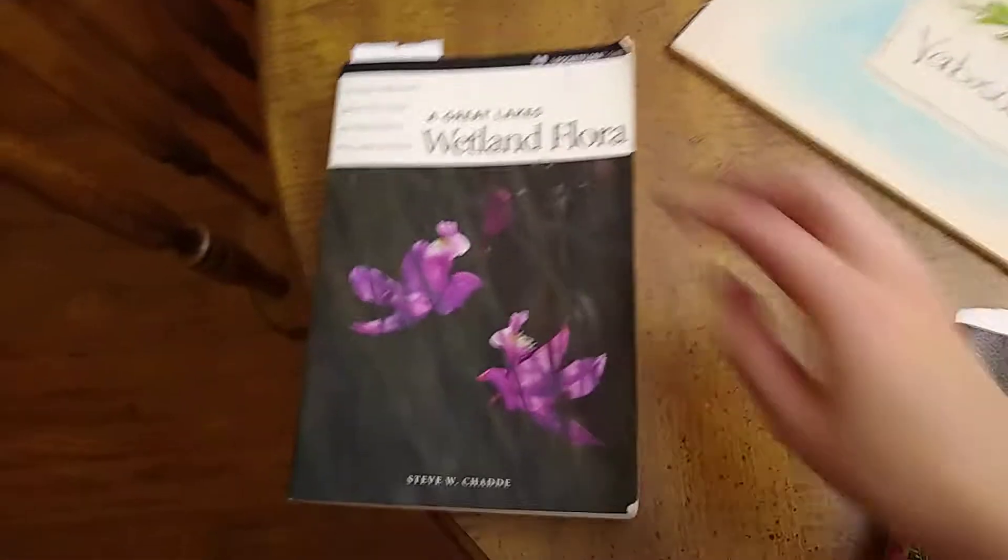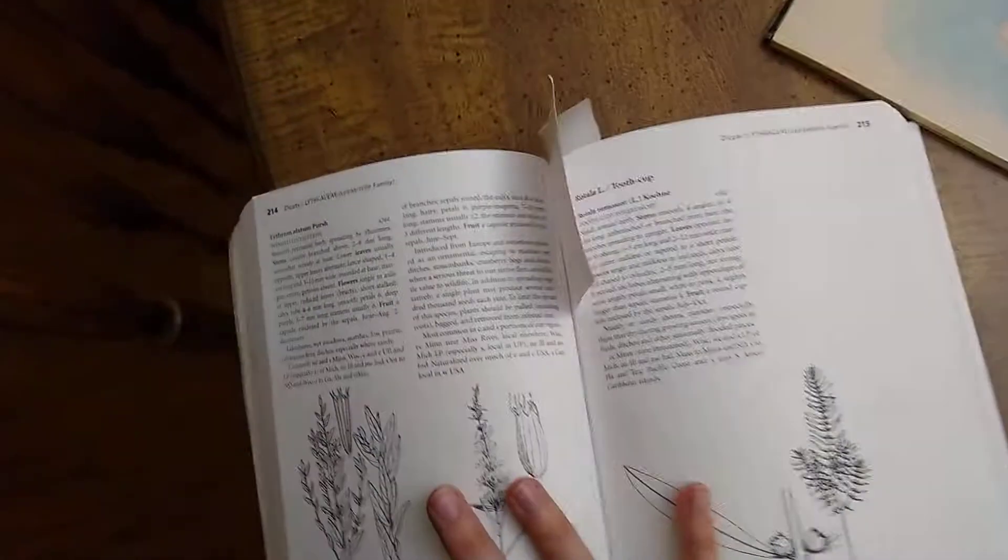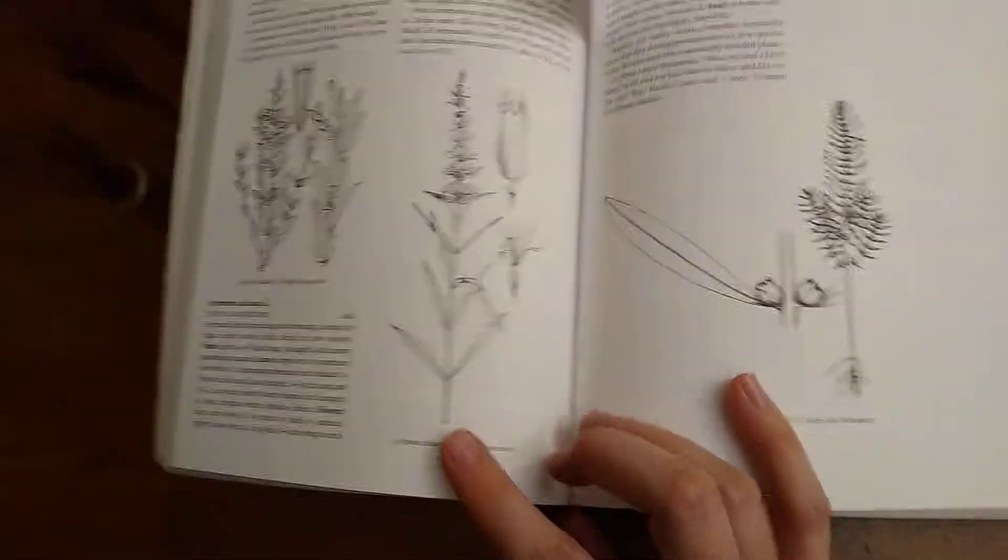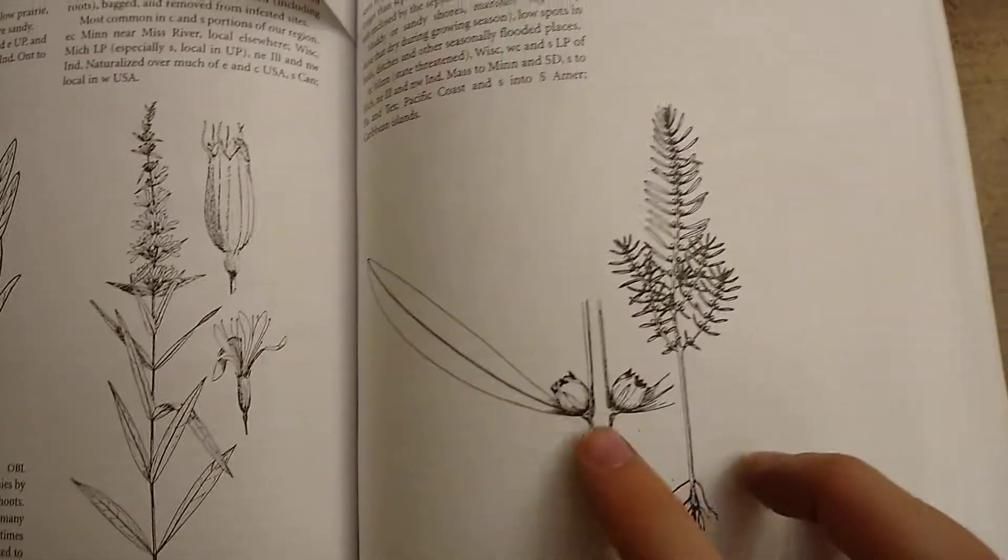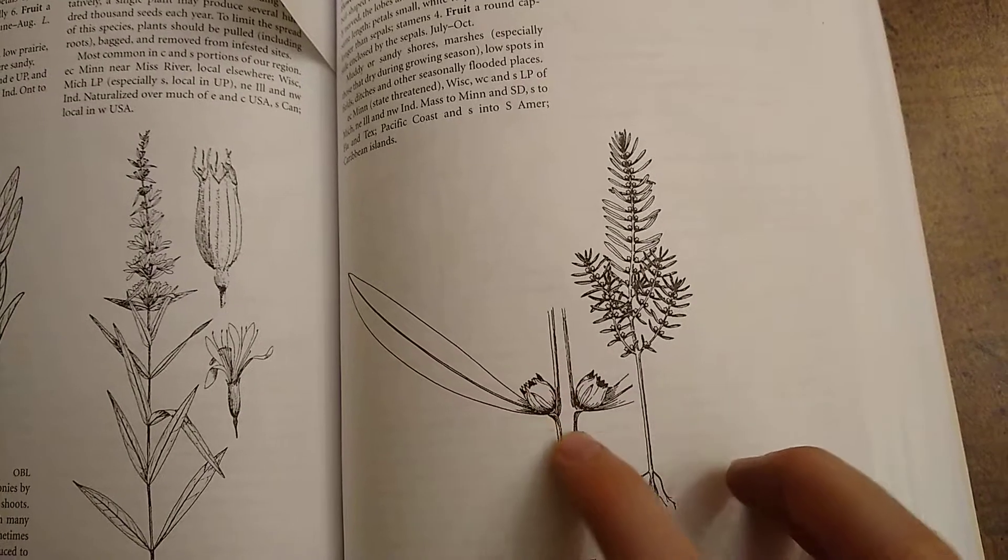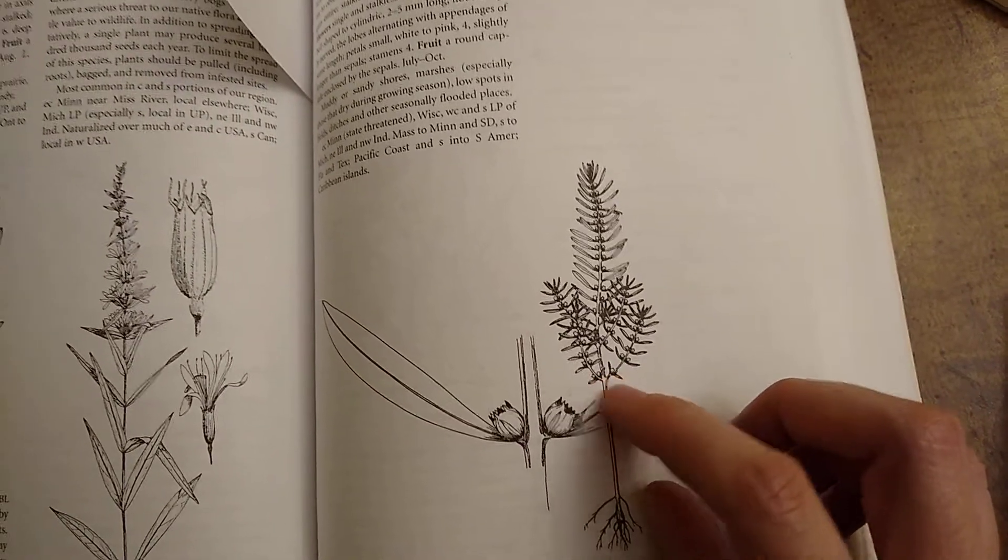Let's check another resource. Here, again, we have the whole plant drawn. But look, there's a close-up on a distinguishing feature of this plant. What the little flowers look like on it.